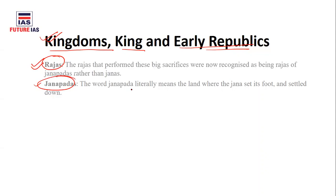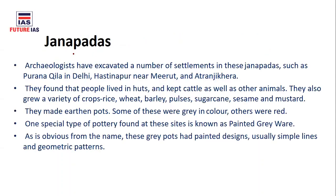Now let's understand Janapadas. The word Janapada is made up of two words: 'Jana' meaning people, and 'pada' meaning foot. So Janapada literally means the land where the Jana has set its foot — where the people settled down. The rulers who were part of the Janapada put their feet on the land, and the name itself comes from these two words.